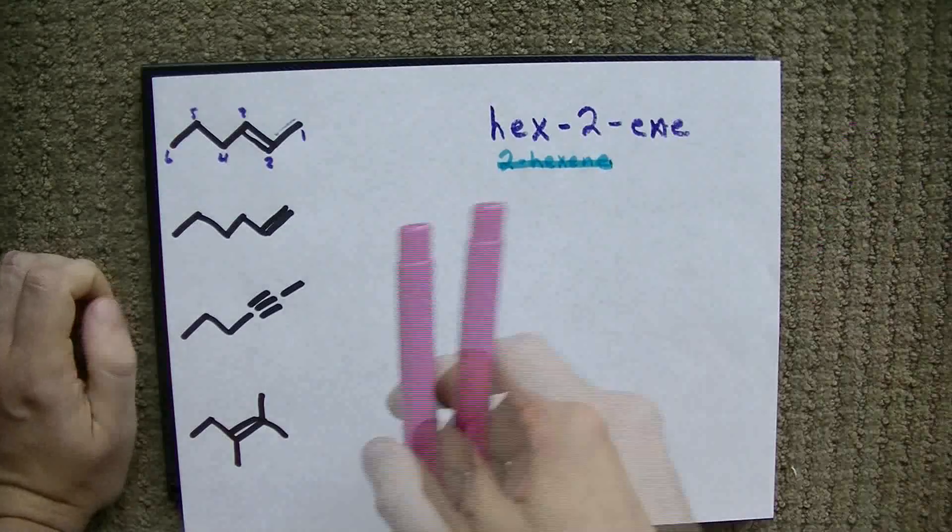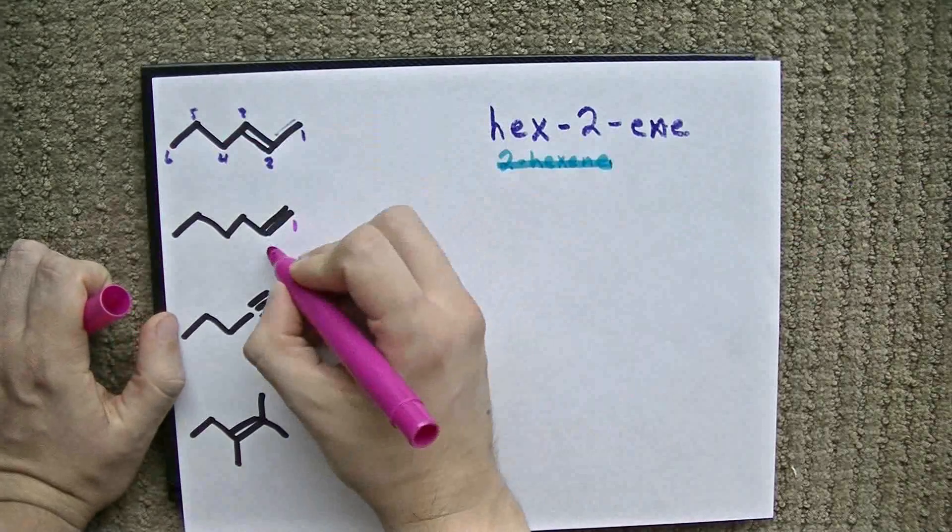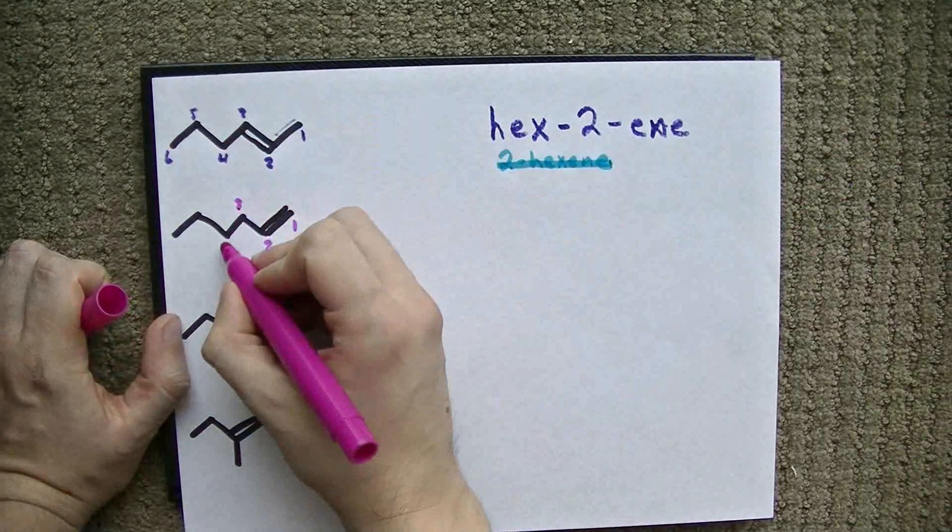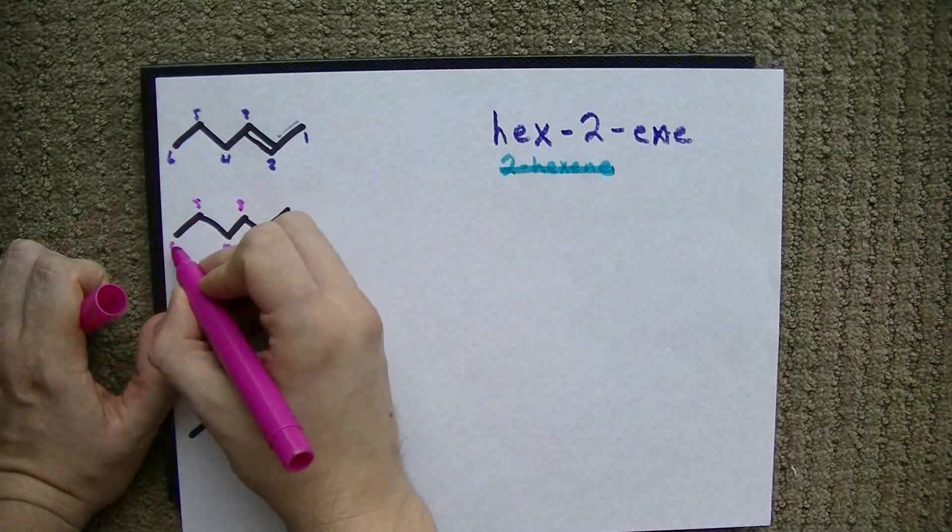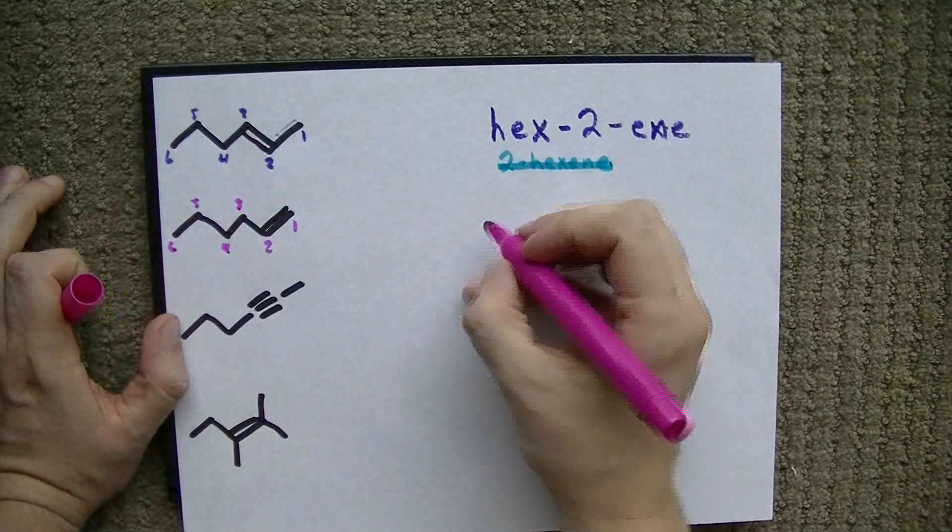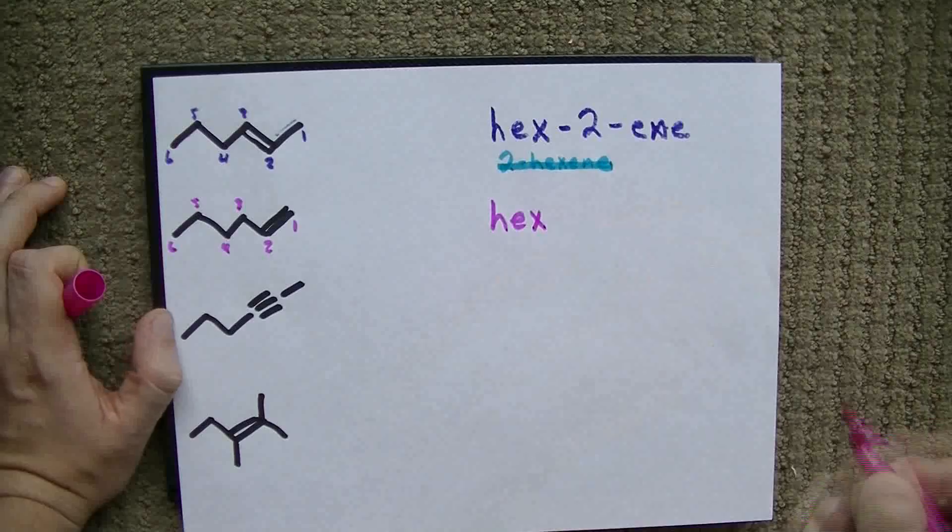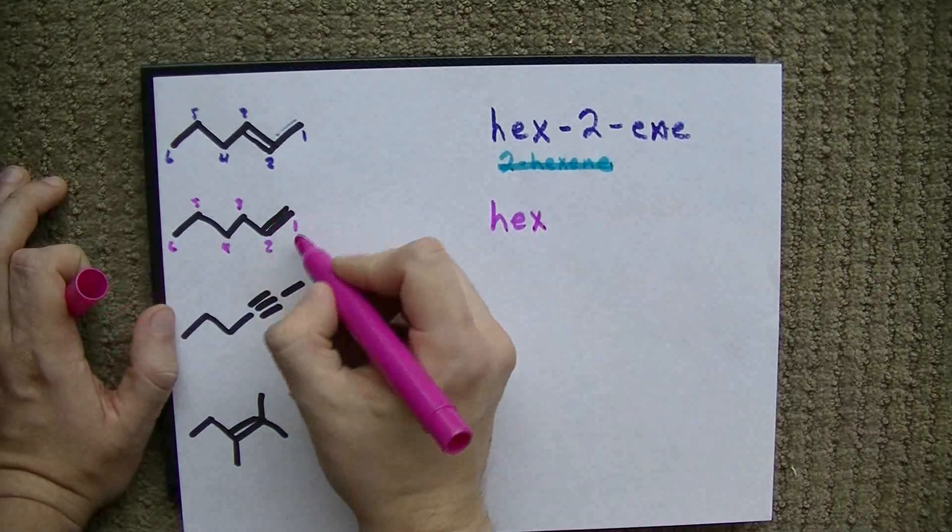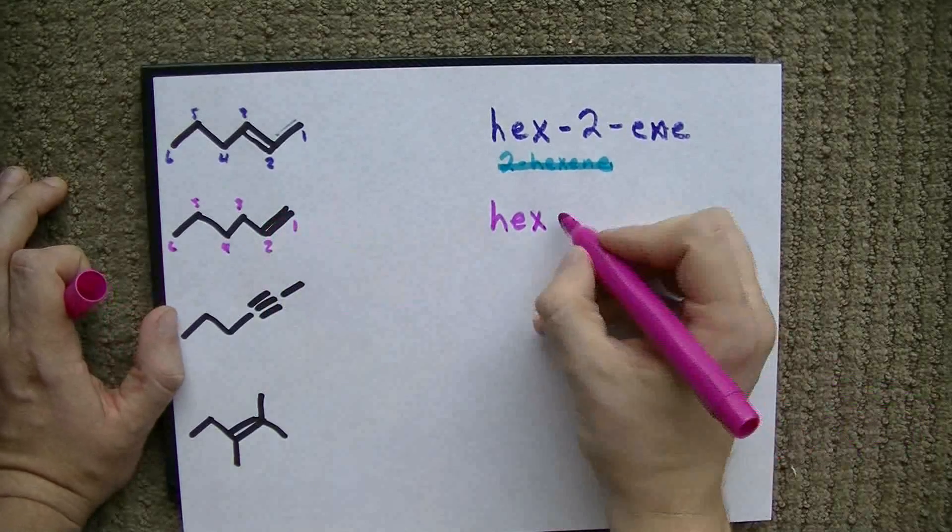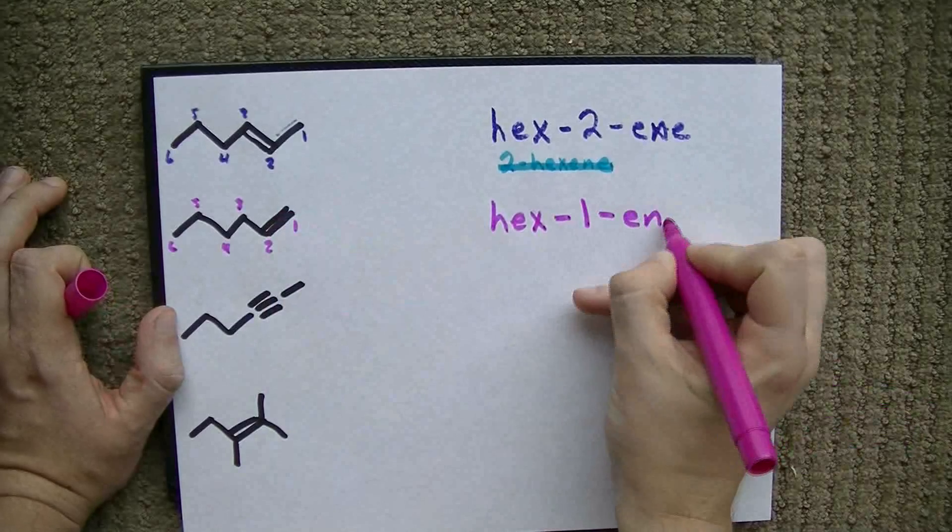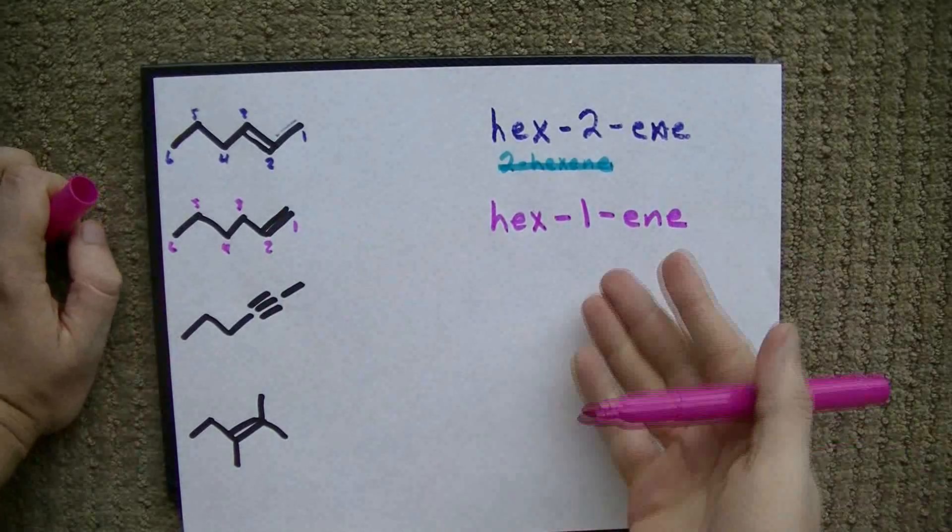Let's try this again. We've got 1, 2, 3, 4, 5, 6 carbons in a chain. So, again, it's a hex, and the double bond starts at carbon number 1. So, this is hex-1-ene. Pretty straightforward, eh?